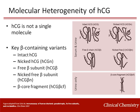HCG is a molecularly heterogeneous hormone, and numerous variants of HCG are usually present in the blood and urine. In addition to the intact, biologically active form of HCG, other variants include degraded forms: nicked HCG produced by a protease that cleaves the beta subunit between amino acids 47 and 48, the free beta subunit of HCG, the free nicked beta subunit, and the beta core fragment. All of these HCG variants can be detected in the serum and urine.